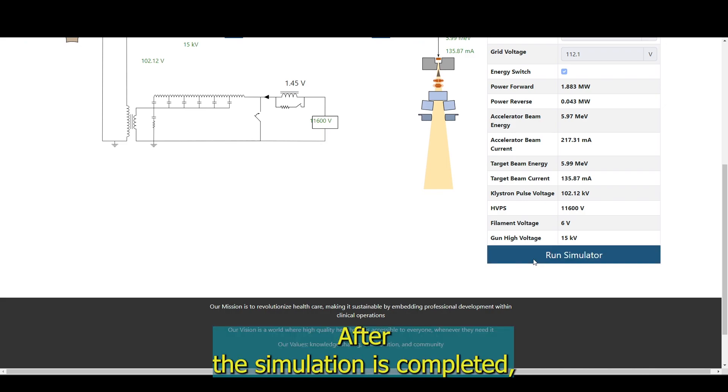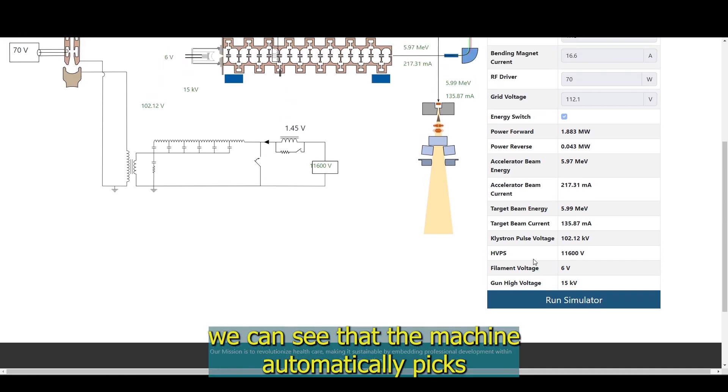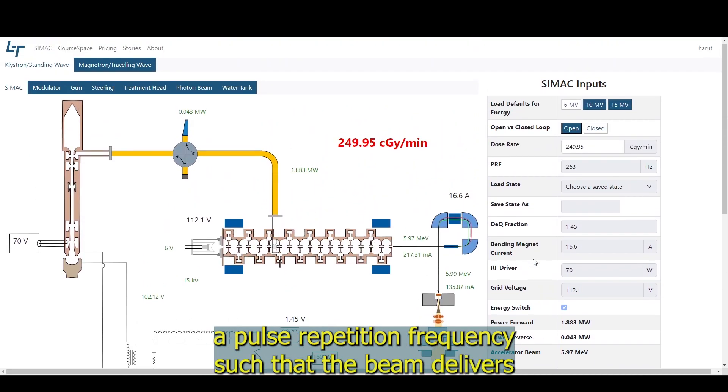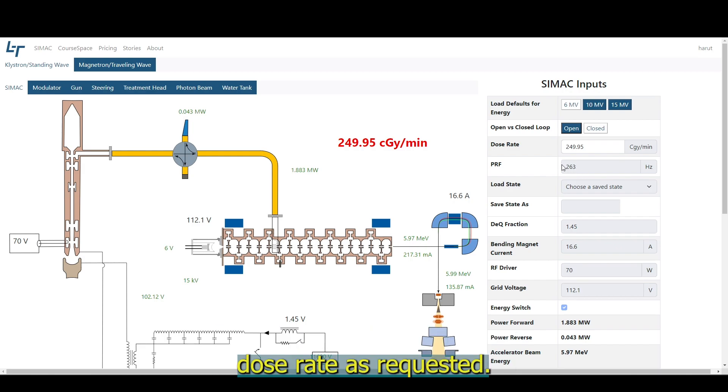After the simulation is completed, we can see that the machine automatically picks a pulse repetition frequency such that the beam delivers dose rate as requested.